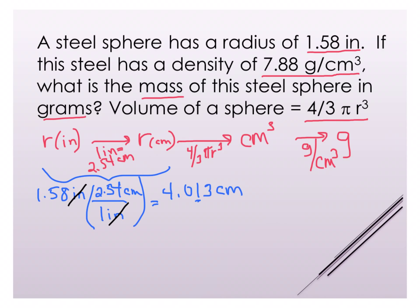I can say that I've got 4/3 times π times 4.013 centimeters and I need to cube that. Now I can take and put that into my calculator, so I get 4 divided by 3 times π.